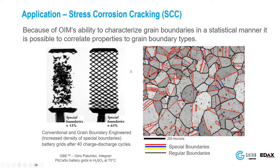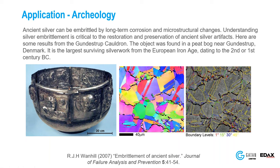Here's an example I find quite interesting — an ancient prehistoric cauldron from the second century BC found in a bog in Denmark. You can see the microstructure has lots of twins in it as well. The hope was that from a very small sample from the cauldron, they could get an idea of how to prevent it from corroding in order to preserve it.